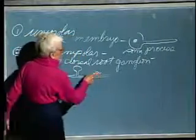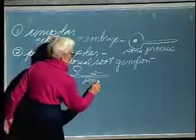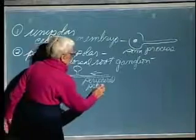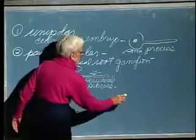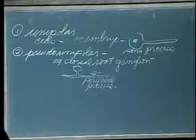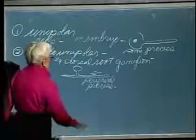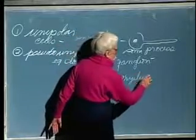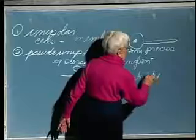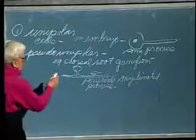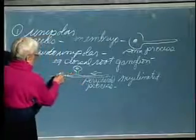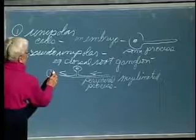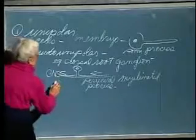We had a peripheral process. Why don't we just call it a dendrite? Because it's myelinated — so this is a rare exception. This peripheral process is myelinated, though it serves the function of a dendrite by bringing the information into the soma. And we call a process that's on its way to the CNS a central process.